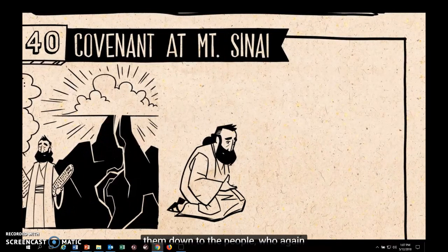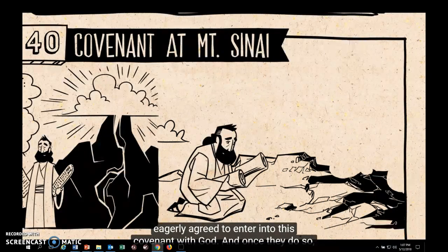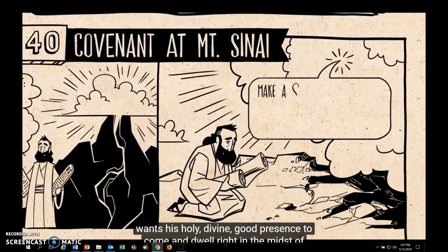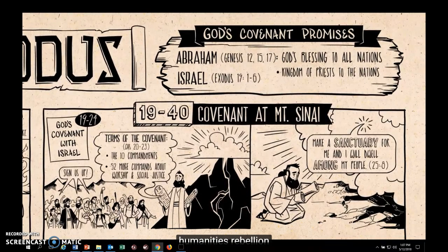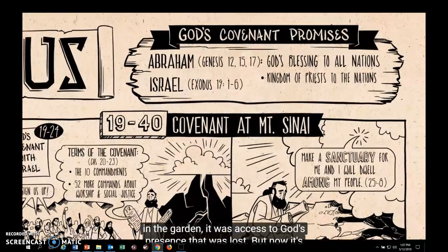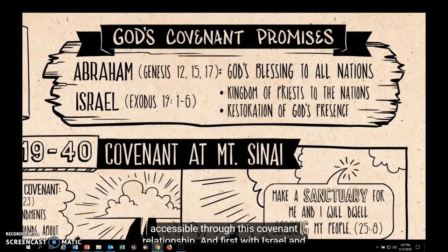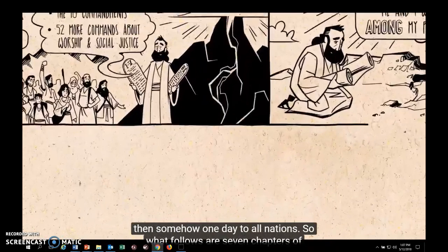Moses writes down all of these laws and brings them to the people, who eagerly agree to enter into this covenant with God. Once they do, God takes the relationship forward another step. He tells Moses he wants his holy, divine, and good presence to come and dwell right in the midst of Israel, developing another aspect of his covenant promises. After humanity's rebellion in the garden, access to God's presence was lost. But now through the family of Abraham, God's presence is becoming once again accessible — first with Israel, and then somehow one day to all nations.